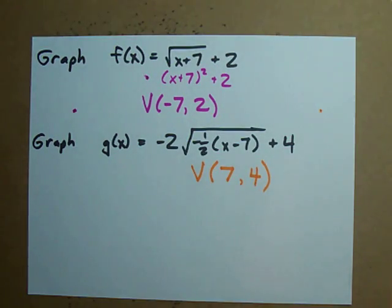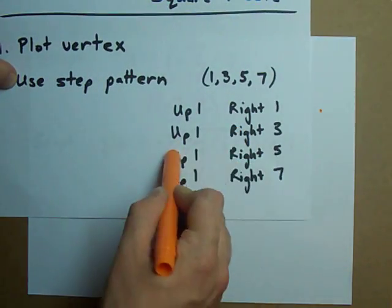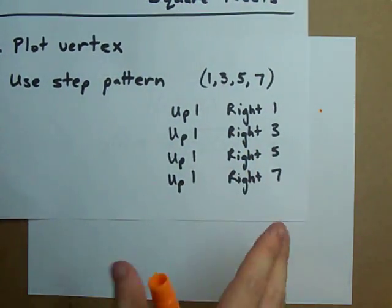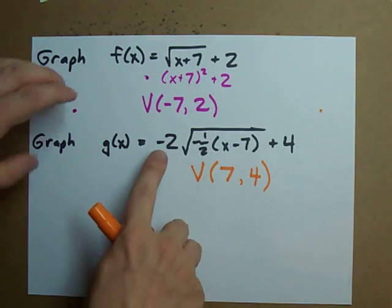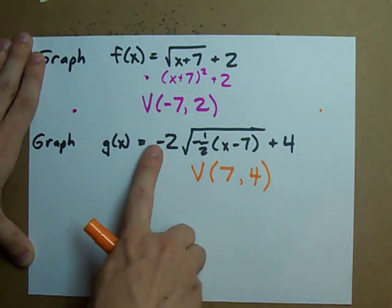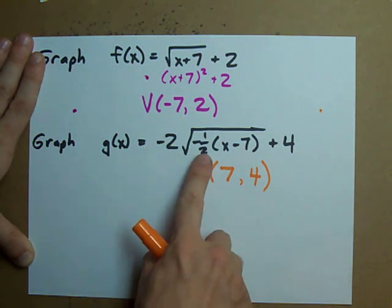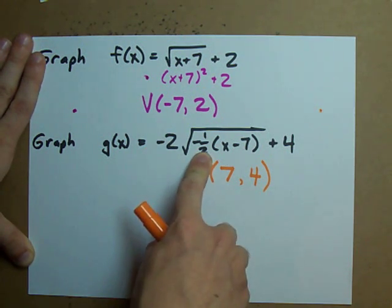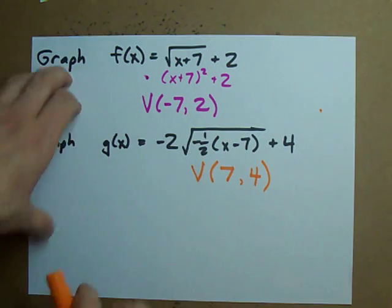Now we have a step pattern. Up one right one. Up one right three. Up one right five. But we have to adjust it because we're stretched by two vertically, flipped vertically, stretched by two horizontally and flipped horizontally.